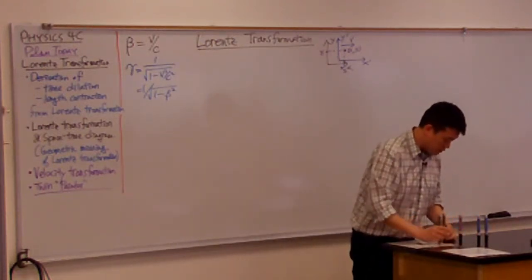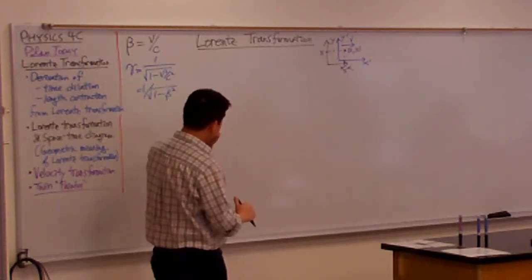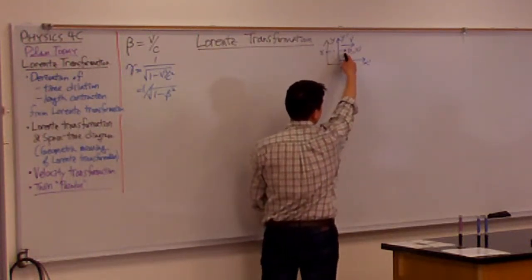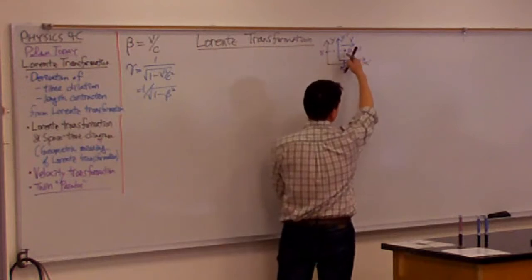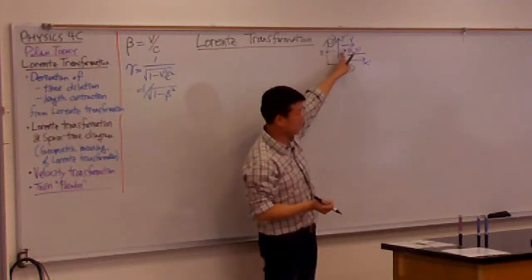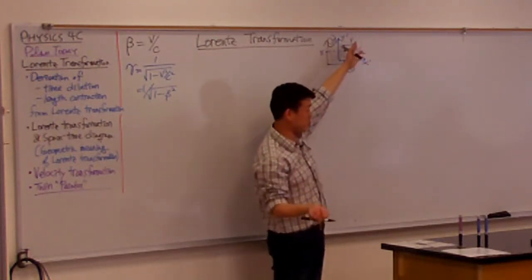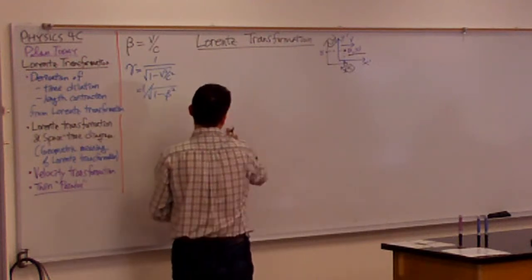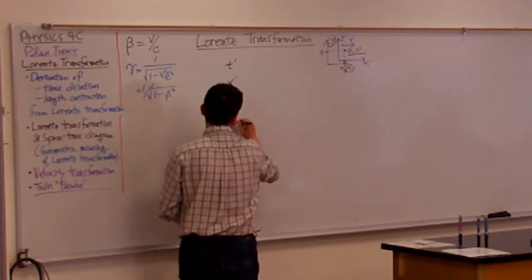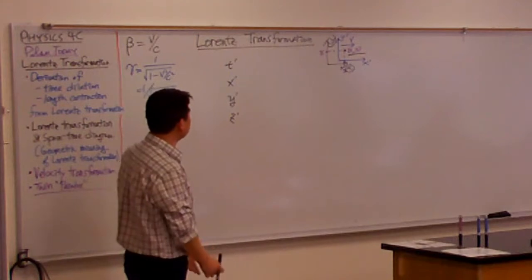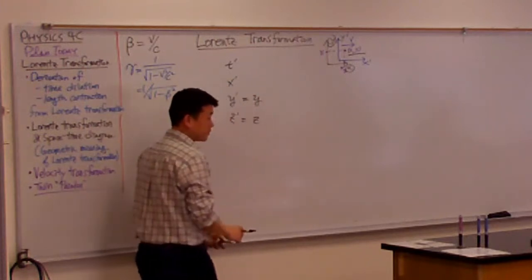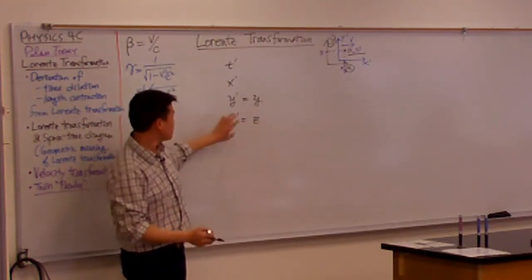All right, so with that intuition, this is the transformation I am going to write down. Given the description of this point in the unprimed coordinates, I want to be able to describe the exact same point in terms of the primed coordinate variables. So what I want is the primed coordinate variables: T prime, X prime, Y prime, Z prime. Let me do the easy ones first. Y and Z don't change because nothing is moving in those directions. So whatever Y and Z coordinates you had, that's the same primed coordinates.